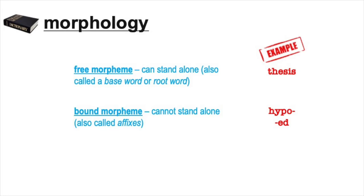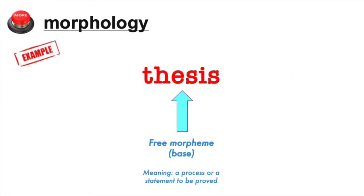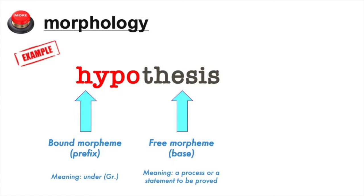Let's go through an example of how to break down a word morphologically — also called morphemic analysis. This is an important skill in developing and expanding vocabulary. Let's look at the word 'thesis.' The word 'thesis' by itself is a free morpheme; it can't be broken down into any more individual meaningful parts, and it means 'a statement to be proved.' If we add the bound morpheme 'hypo' to 'thesis,' we get the new word 'hypothesis,' which has a different meaning now that we've added that bound morpheme.